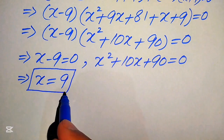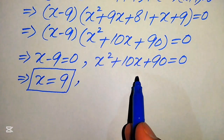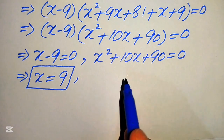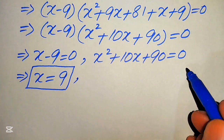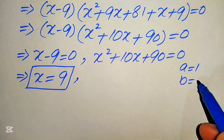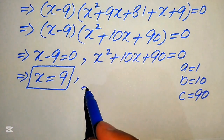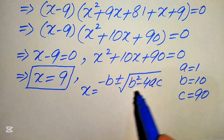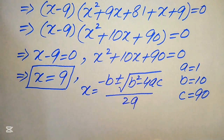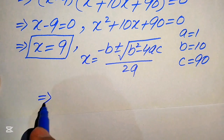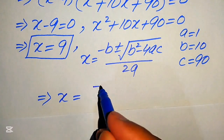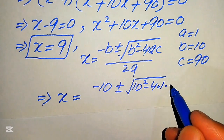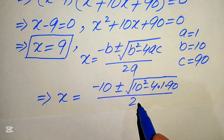To find the other solutions, we solve the quadratic equation x squared plus 10x plus 90 equals 0 using the quadratic formula. The coefficients are a equals 1, b equals 10, and c equals 90. The quadratic formula is x equals negative b plus or minus the square root of b squared minus 4ac, all divided by 2a. Substituting, we get x equals negative 10 plus or minus the square root of 10 squared minus 4 times 1 times 90, divided by 2.